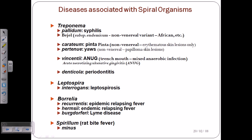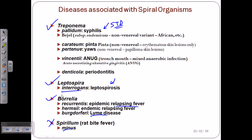Diseases associated with spirochetes: Treponema pallidum causes syphilis, a dangerous sexually transmitted disease. Leptospira interrogans causes leptospirosis. Borrelia burgdorferi causes Lyme disease, and Borrelia recurrentis causes epidemic relapsing fever. Spirillum can cause rat-bite fever-like symptoms. We will cover Treponema, Leptospira, and Borrelia in separate videos. I hope this gives you a basic idea — thank you.